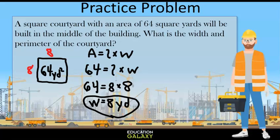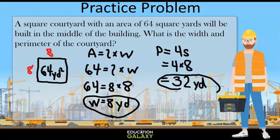Now to find perimeter. Well, since a square has all 4 sides of the same length, the perimeter would be 4 times the side length. And since our side is 8, our perimeter is 4 times 8 which is 32. So our answer is 32 yards.